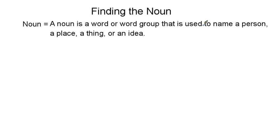We're here talking about finding the noun. This is the first video in a series of three videos about nouns, and this video is dealing with just the most simple part of it, finding the noun. As you can see from the definition on the screen, a noun is a word or word group — and yes, there is something called a noun phrase, which we will get to in a later video — and it can be used to name a person, place, thing, or an idea.